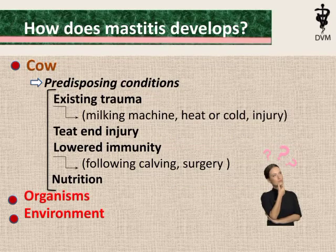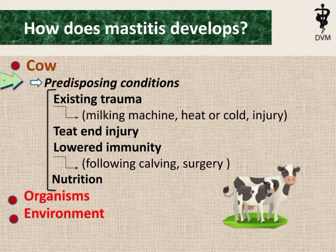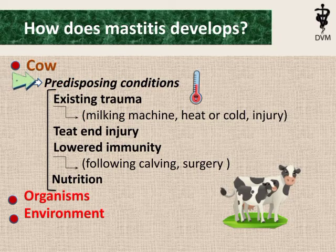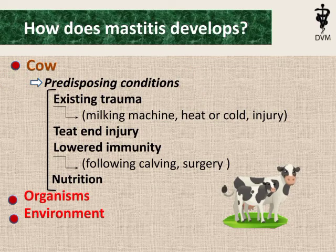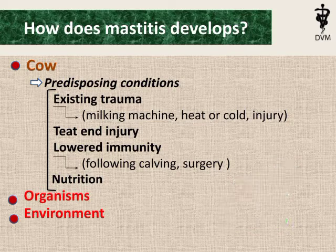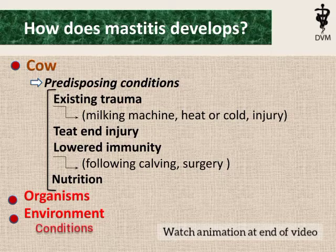How does mastitis develop? The predisposing conditions include existing trauma caused by milking machines, heat or cold, or any kind of injury to the udder or teat, and low immunity due to any reason or due to nutrition. Other causes like microorganisms and environmental conditions also help mastitis to develop.